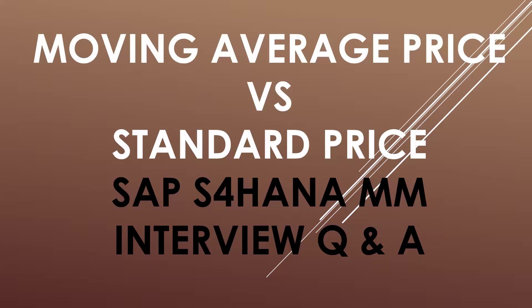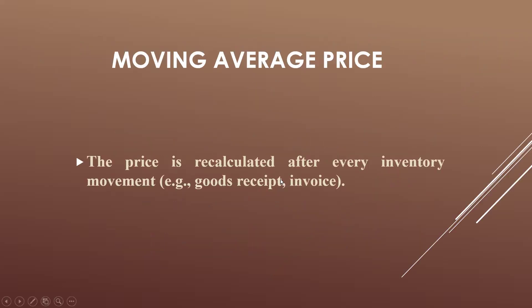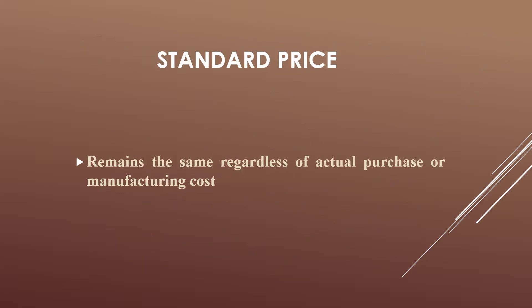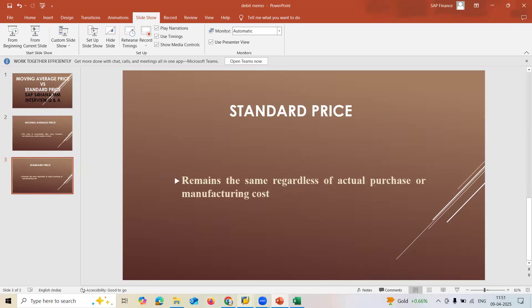Hi, I'm Swamina. Today we are going to see Moving Average Price versus Standard Price in SAP. This is a common interview question - what is the difference between Moving Average Price (MAP) versus Standard Price (STD price)? Moving average price is recalculated after every goods movement inventory movement, whereas standard price remains the same as the actual purchase or manufacturing cost.